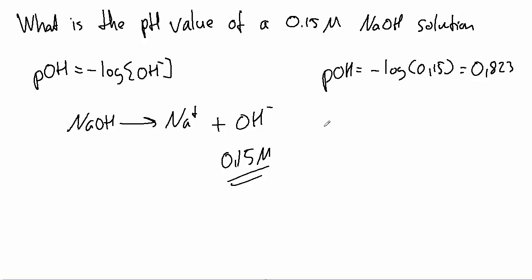But the connection between pOH and pH is really very simple. 14 equals pH plus pOH. So the pH is simply 14 minus the pOH, which means that the pH for this solution is 14 minus 0.823, which gives me 13.177.